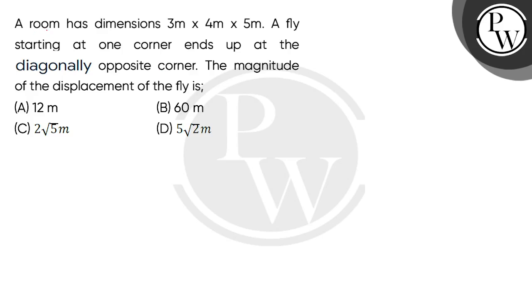Hello, let's read the question. A room has dimensions 3 meter by 4 meter by 5 meter. A fly starting at one corner ends up at the diagonally opposite corner. The magnitude of the displacement of the fly is: